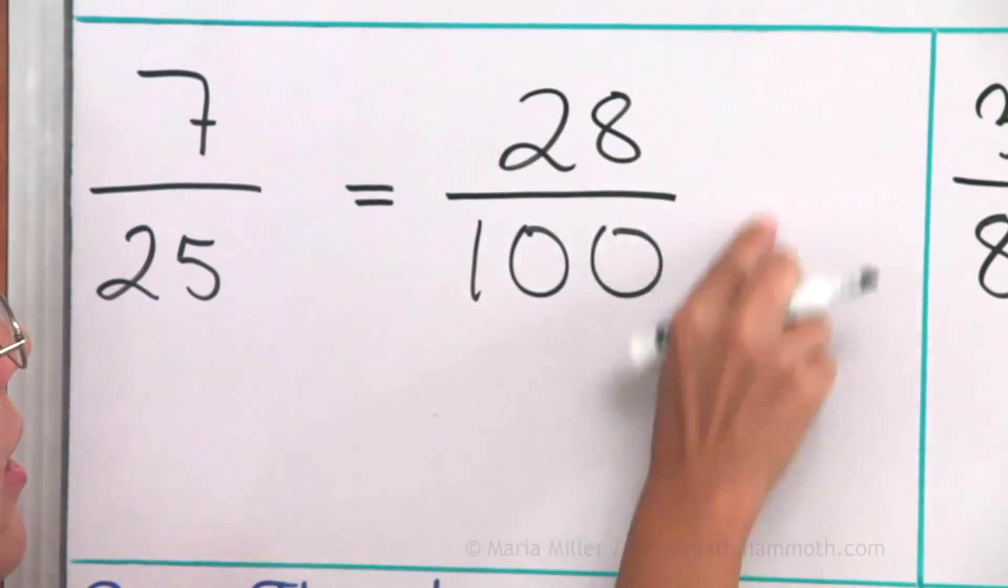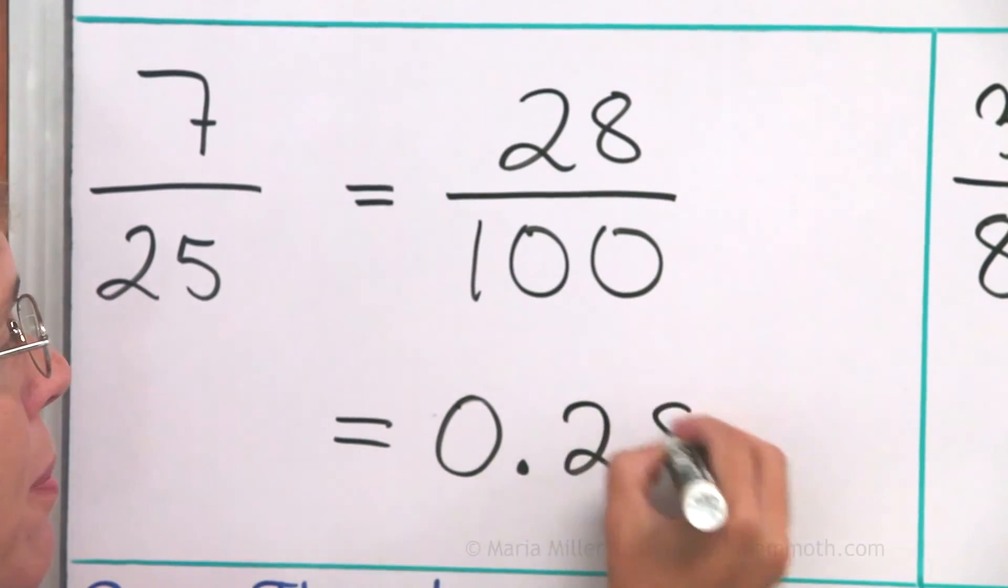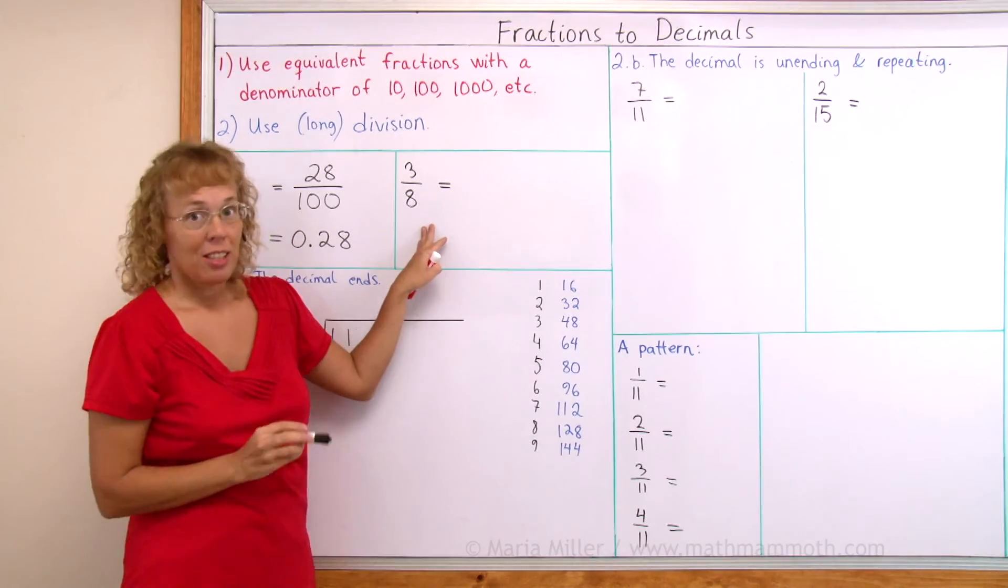And now, of course, we can write this as a decimal. 28 hundredths is 0.28. Here's another such kind.